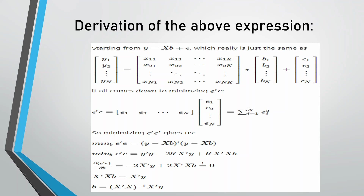In order to minimize this expression, we differentiate it with respect to the variable of which we want to find the minimum value. Since we want to find the minimum value of the coefficients, we differentiate with respect to b — the coefficient matrix — giving: -2*X-transpose*y + 2*X-transpose*X*b = 0.